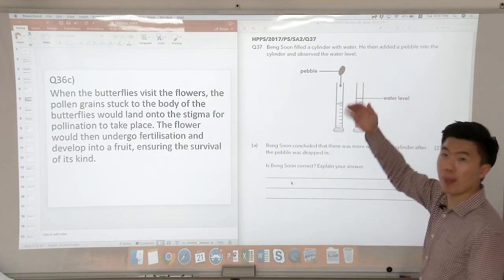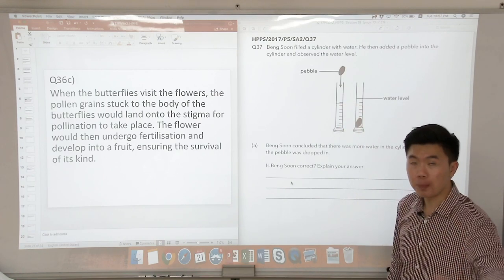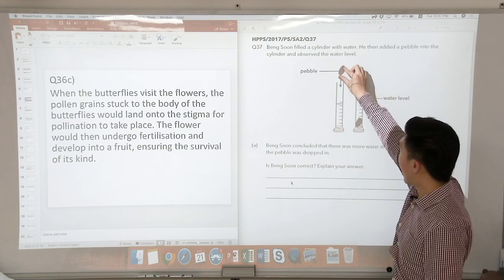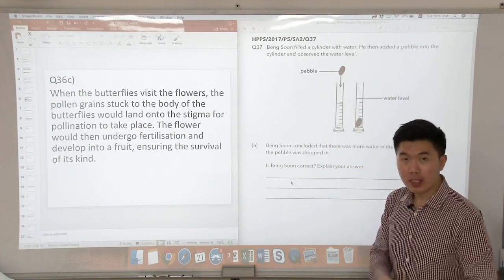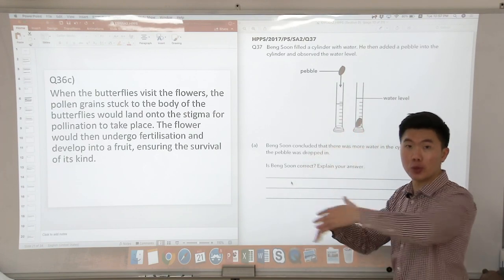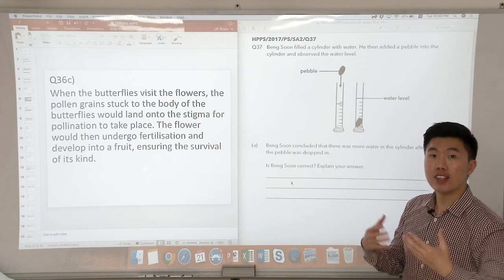When you place the pebble into the water, what will happen to the water? The water will get displaced, which means that the pebble occupies space in the water. The water has to move upwards. Do we add more water to this cylinder or do we take away any of the water? The answer is no.